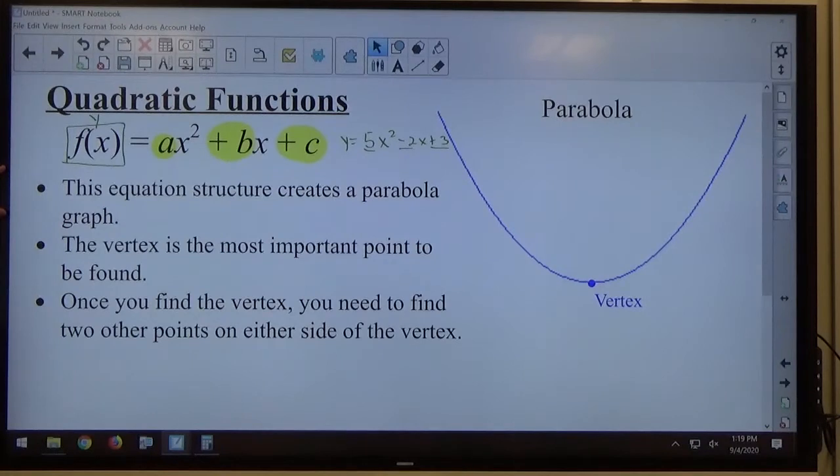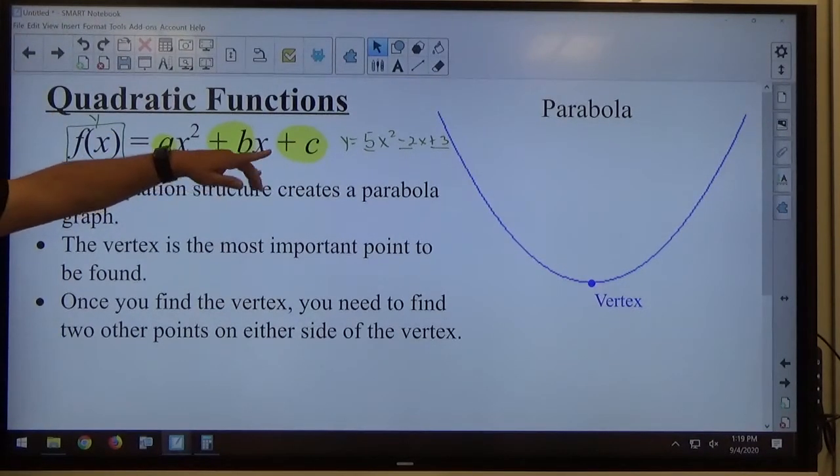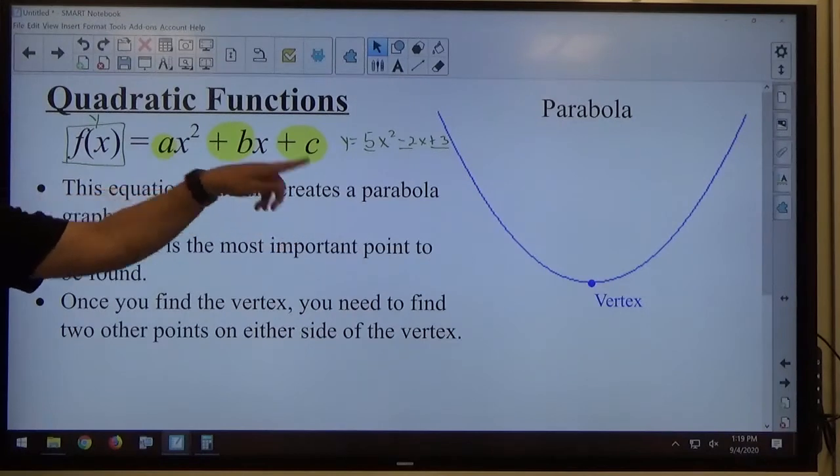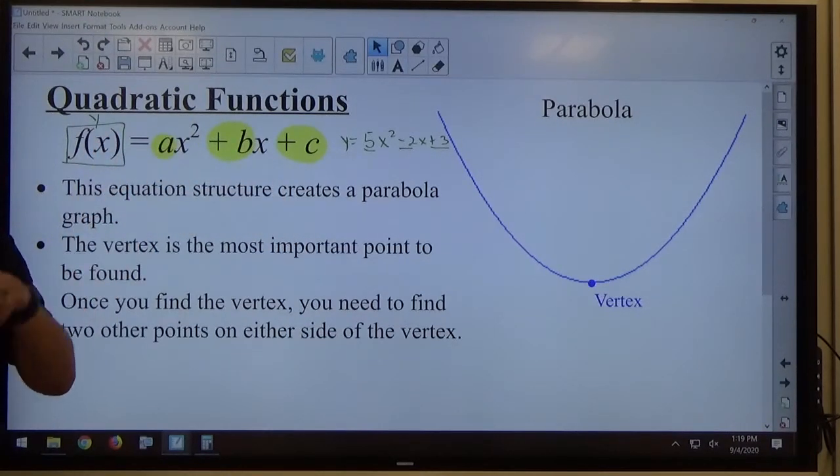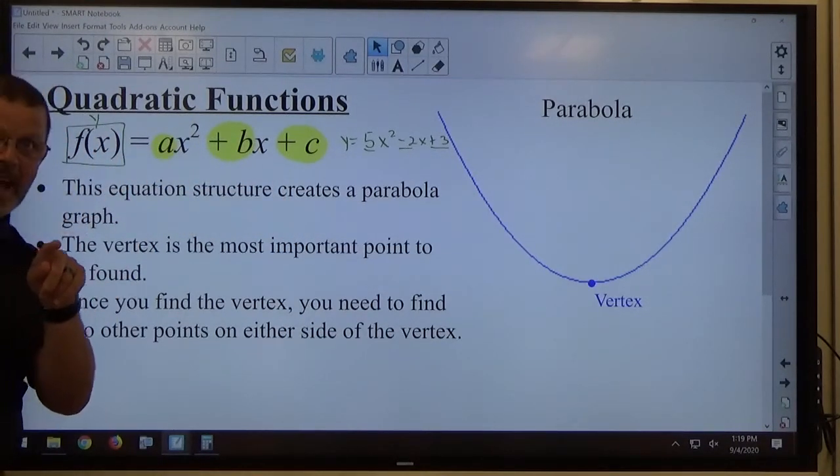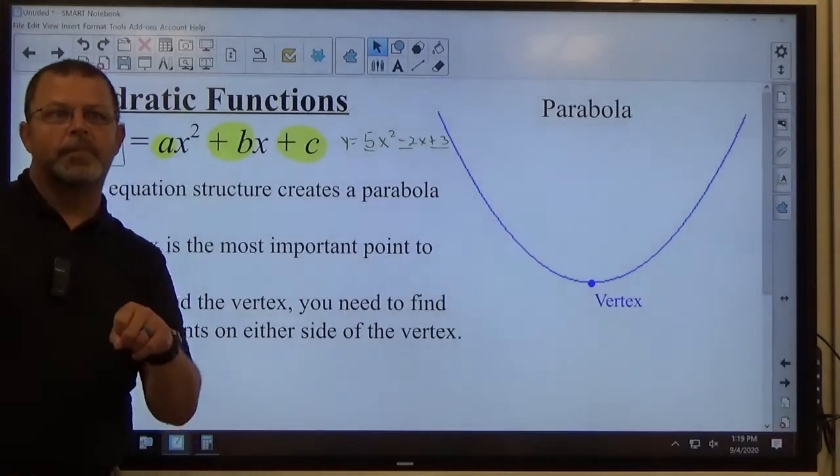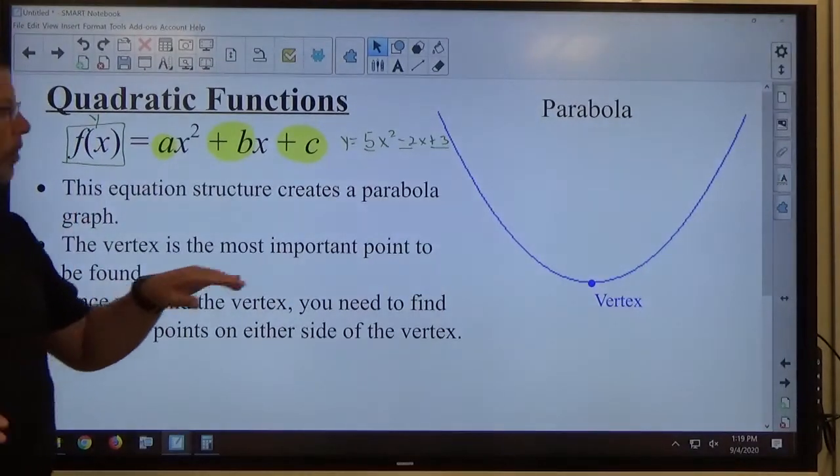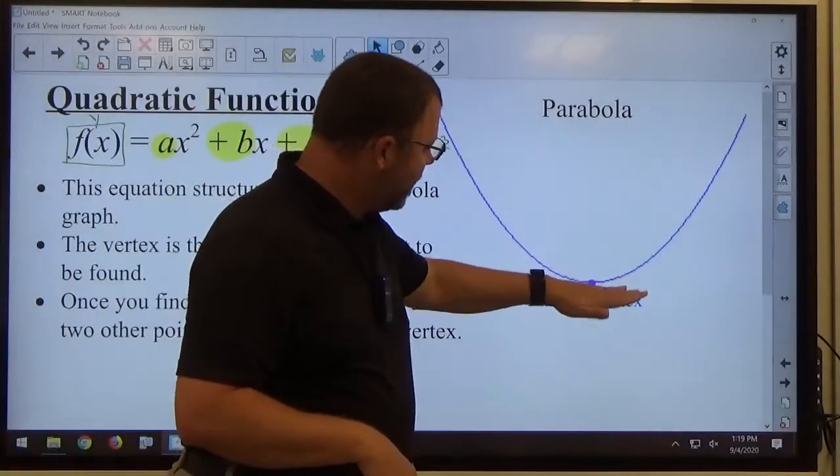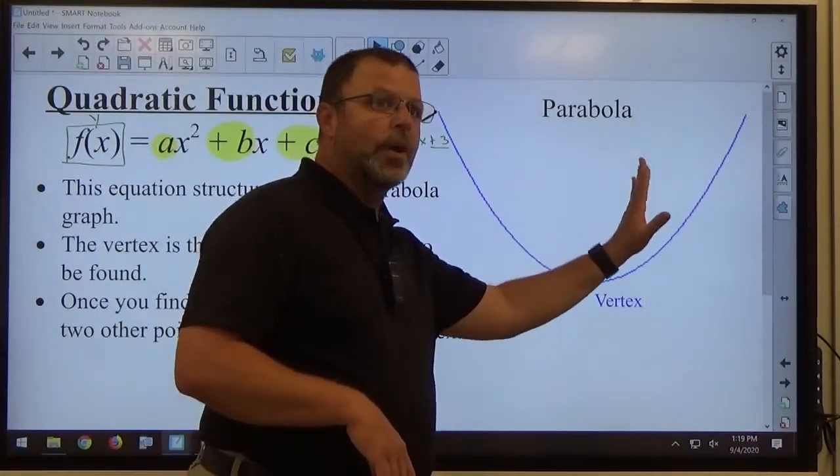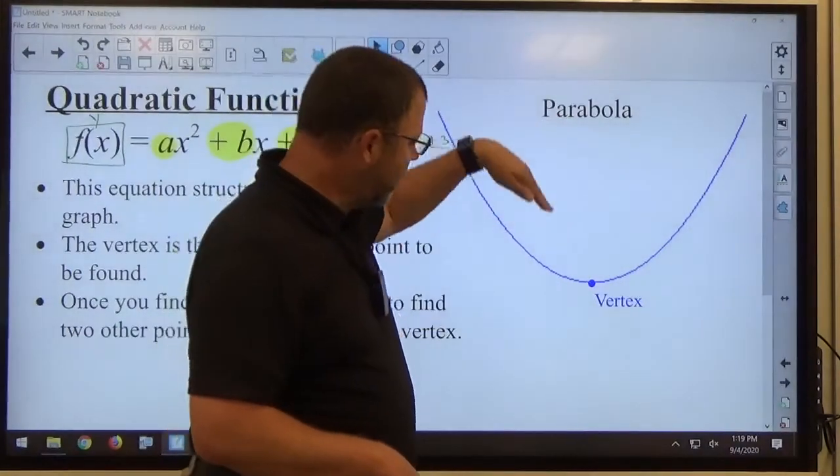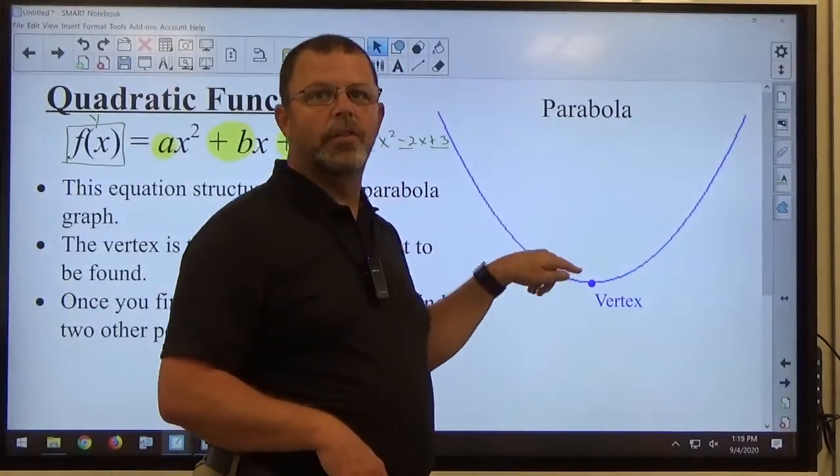The equation structure creates a parabola graph. Every quadratic function makes that picture. Now that picture can be turned a different direction, it could be going downward instead of upward, it could be going to the right instead of to the upper, or maybe go to the left. But no matter how it turns, the point at which it hits the bottom, or the furthest right, or the furthest left, or the furthest up, where it turns and goes back the other way, that's called the vertex.